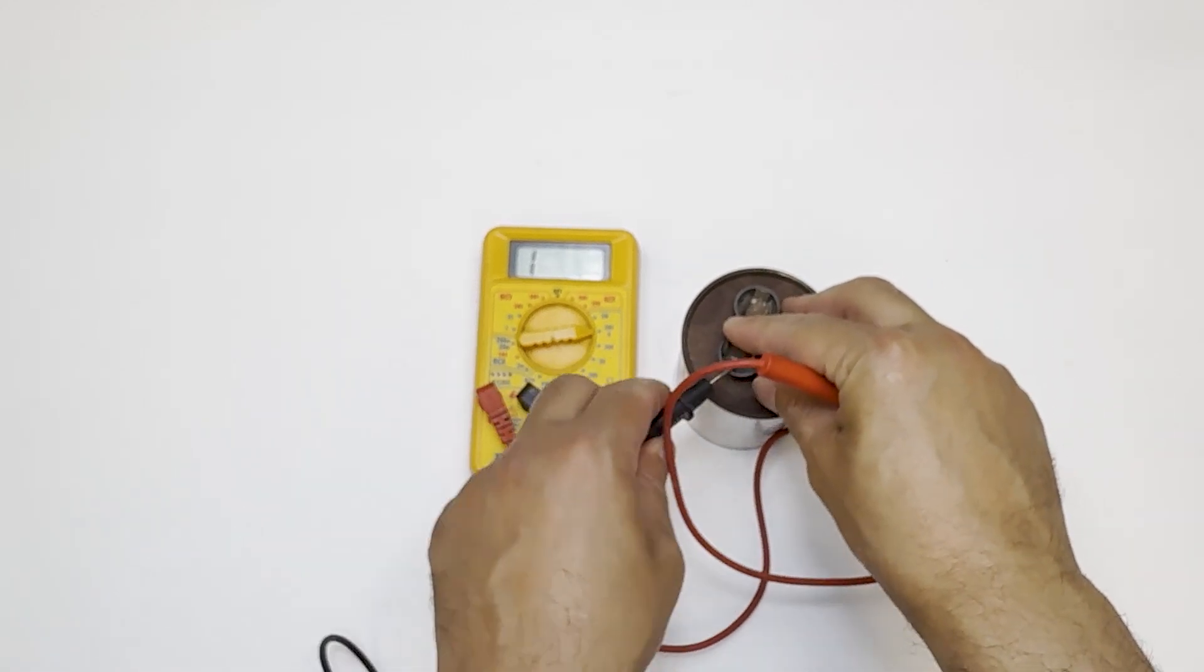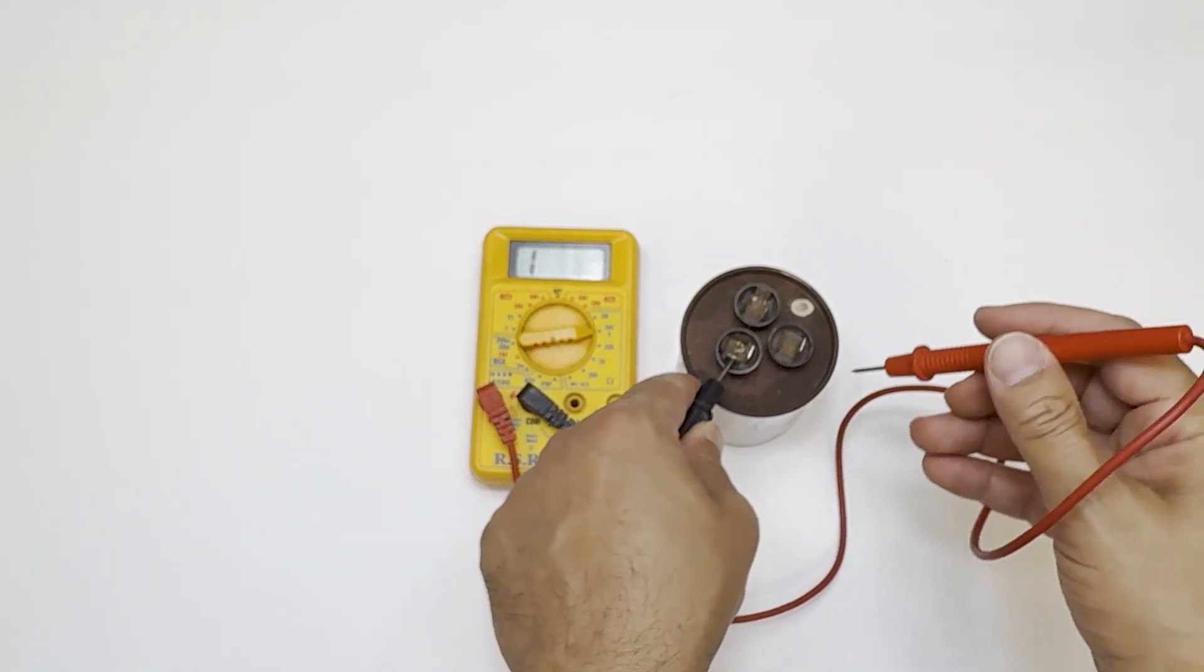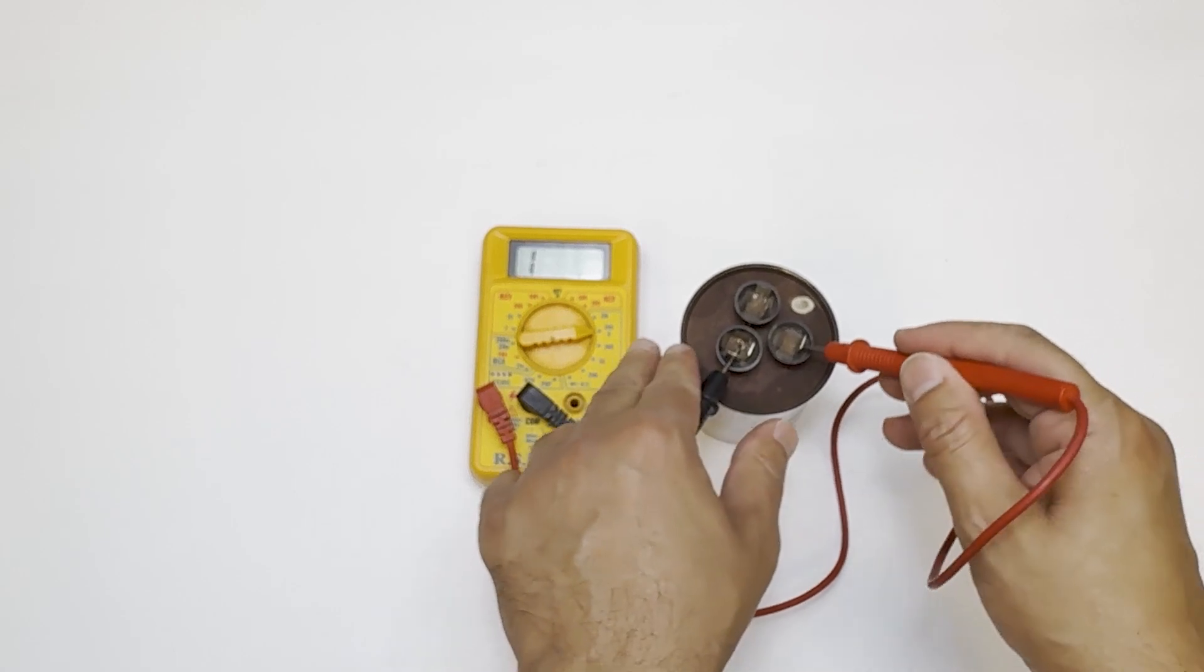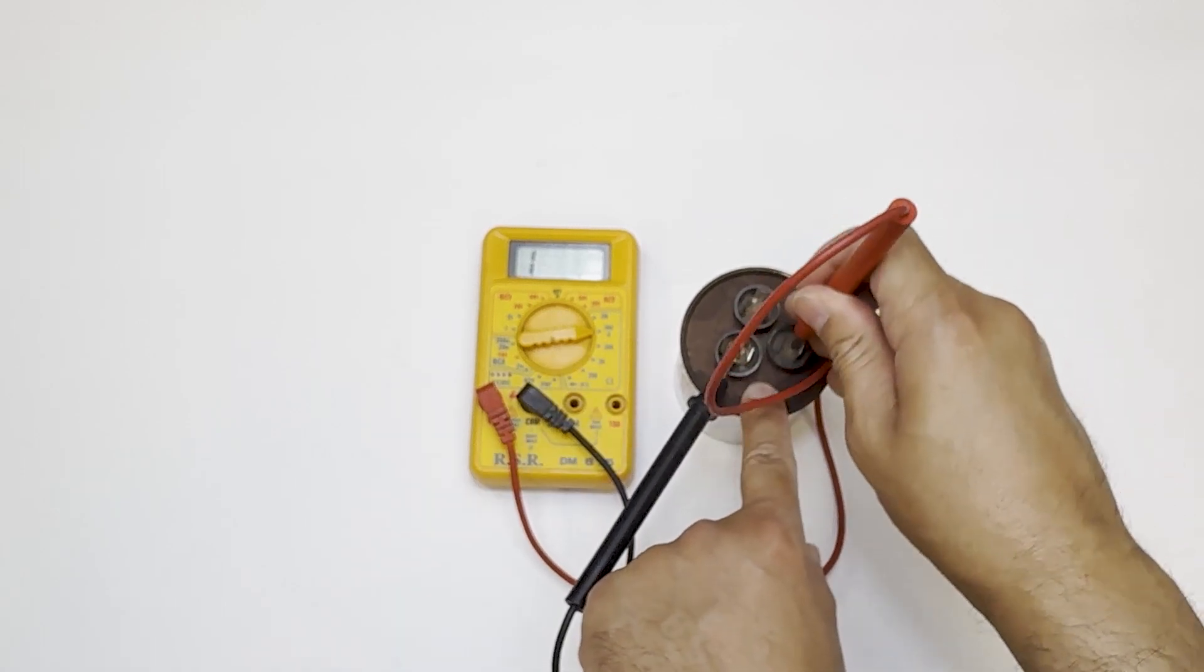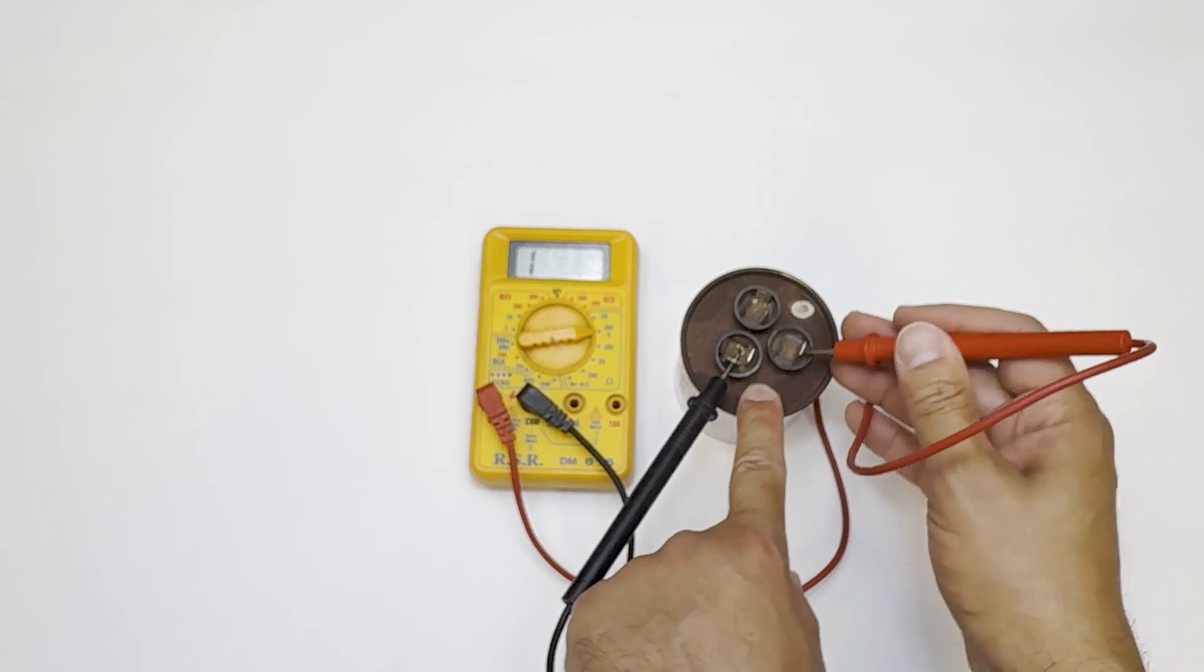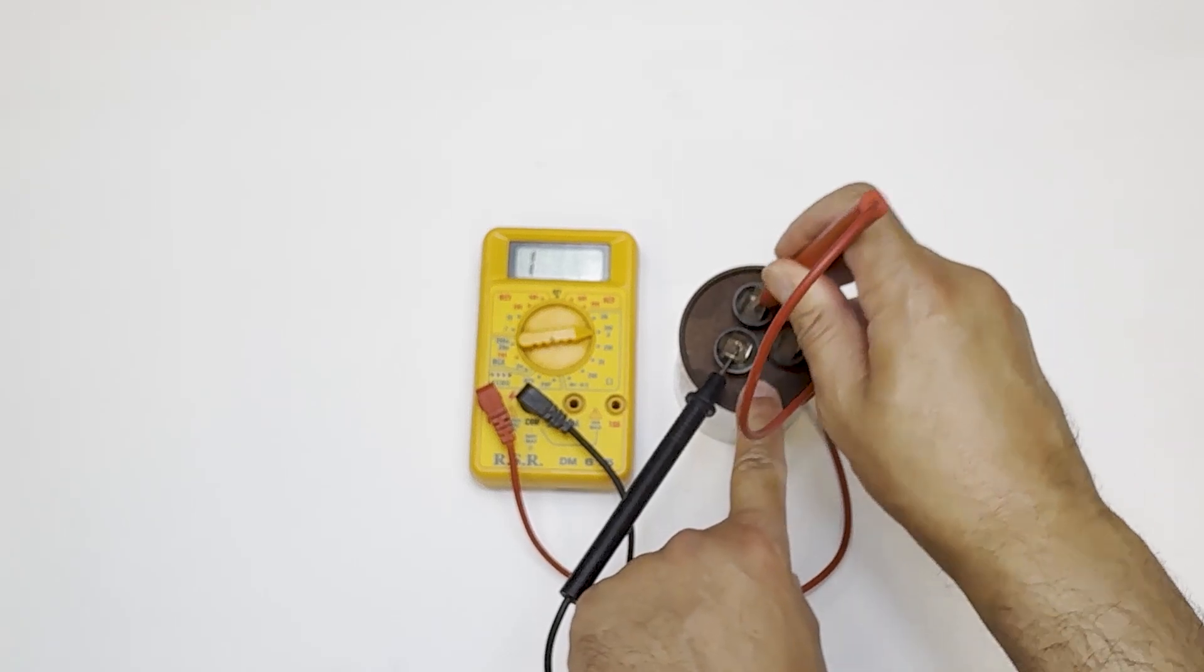A good capacitor will make the meter jump or climb, and then fall back to 1. Let's test the fan side first, and nothing. It just stays at 1. The meter doesn't move at all, so that part of the capacitor is dead.